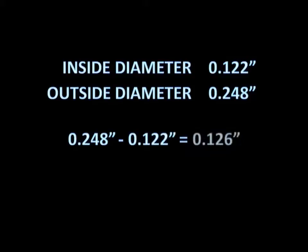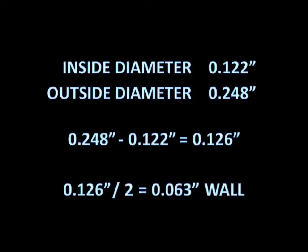Now that we've got a good idea of what the ID and the OD is, we need to do a little math to come up with the wall thickness. What we're going to do is start out with the OD of 0.248, subtract the ID from that of 0.122, and that gives us a balance of 0.126. Because there's two walls, we'll divide the 0.126 by 2 and come up with a wall thickness of 0.063. That's going to give us the three elements we need to begin to look at resources to try to identify this tubing.